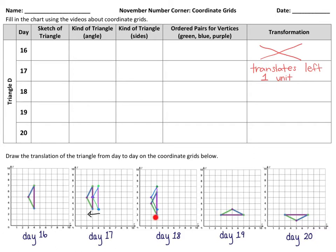We can see from day 17 to day 18 that our triangle has moved down. How many spots? This one moved 1 unit, the blue point moved 1 unit, and the purple point moved 1 unit. So in this box we write "translates," and which direction did it move? It moved down 1 unit, because there's only 1 unit on the coordinate grid that it moved down.